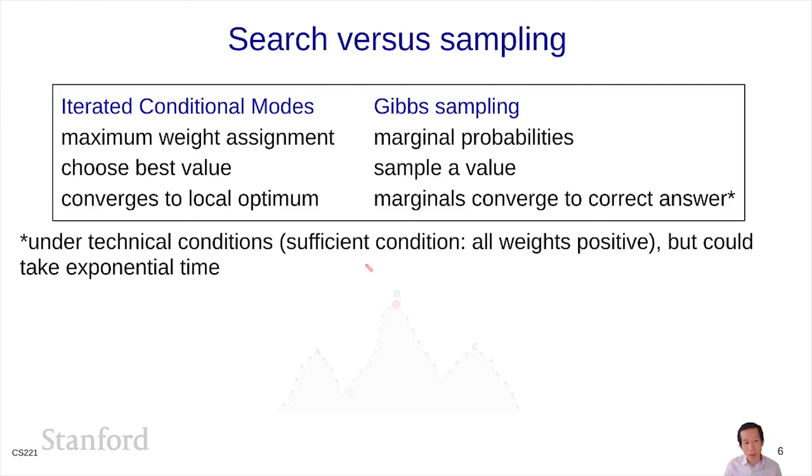The one important caveat is Gibbs sampling is wonderful, but in the worst case, it does take exponential time. Computing marginal probabilities is a really hard problem. Gibbs sampling is just a heuristic with some nice asymptotic guarantees.